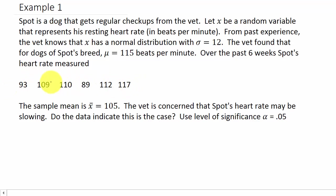The vet is concerned that Spot's heart rate may be slowing. Do the data indicate this is the case? Use level of significance alpha equals 0.05. This right here is a left tail because Spot's heart rate is less than the population average, and so that's what we're going to test.